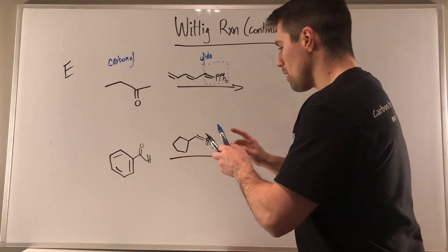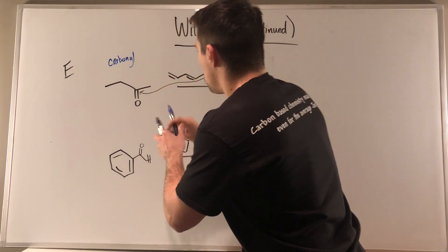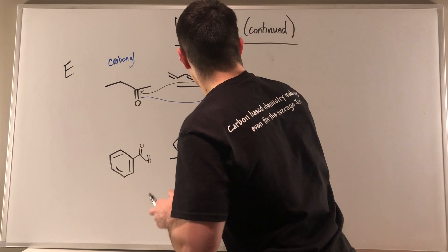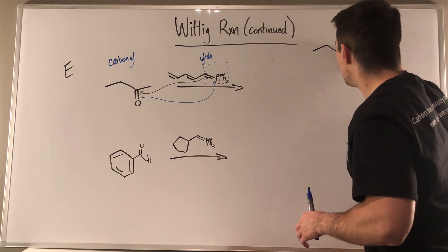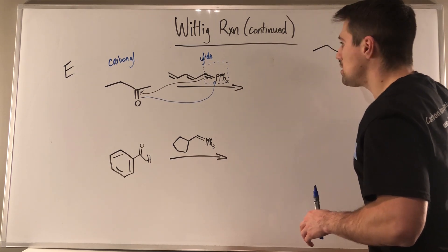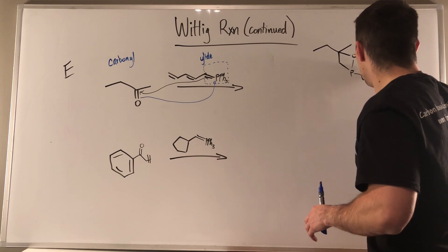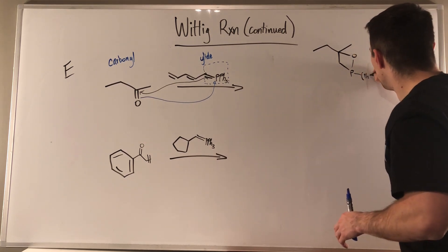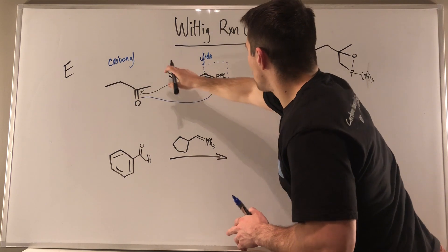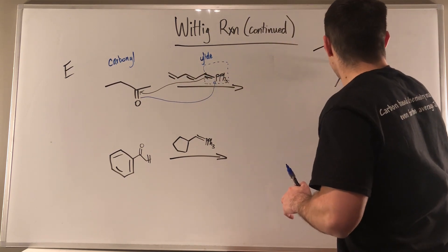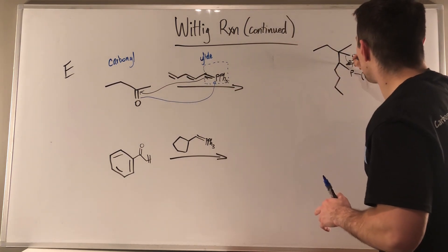We know that we're going to have this carbon attacking that carbonyl carbon, and then this oxygen attaching to the phosphorus. So I'm going to draw this intermediate up here: carbon, carbon, oxygen, phosphorus — with three phenyl groups. We know that these two are going to bond together and these two are going to bond together.